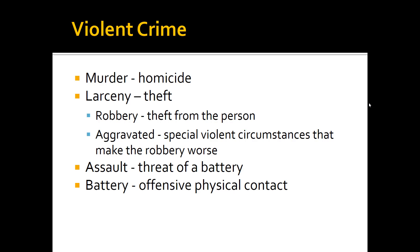When we talk about violent crime, here are the biggies. Sometimes you'll hear the term Part One offenses, which relates to how we track crime in the United States through statistical databases gathered by the FBI, called the Uniform Crime Reports. The Part One offenses include murder — more properly homicide — larcenies, which is theft. If you take something from a person, that's specifically called robbery, which can be made worse as armed robbery or aggravated robbery. We've also got assault, which is the threat of battery, and battery.